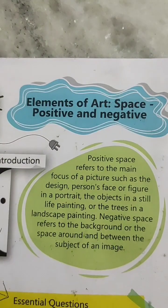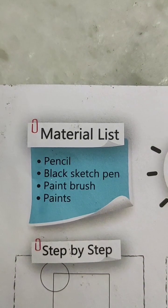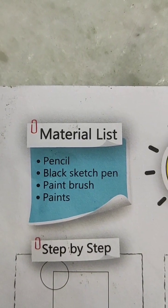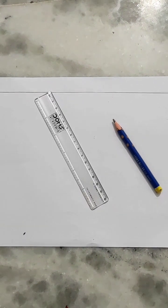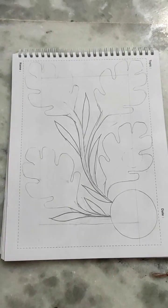For this art we need a pencil, black sketch pen, paintbrush, and paint colors. First, take a white plain paper, then draw some lines using a scale and pencil. Here I am drawing borders first, and now going to the next step which is the drawing.